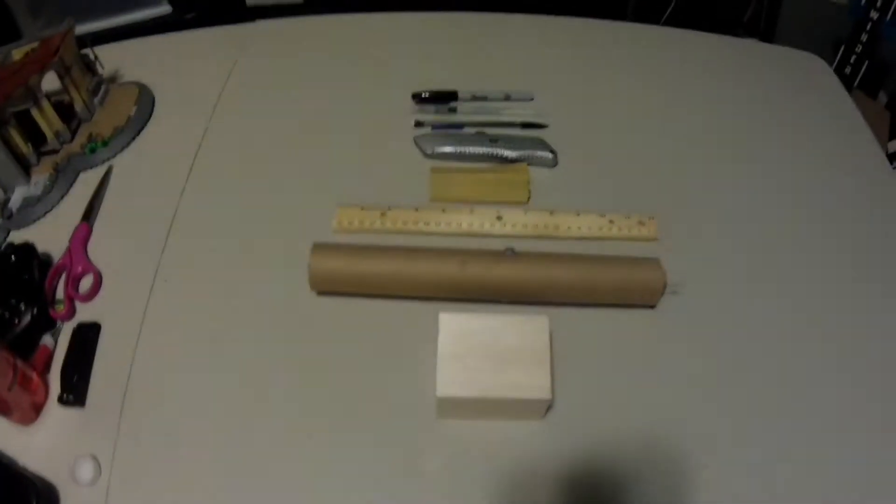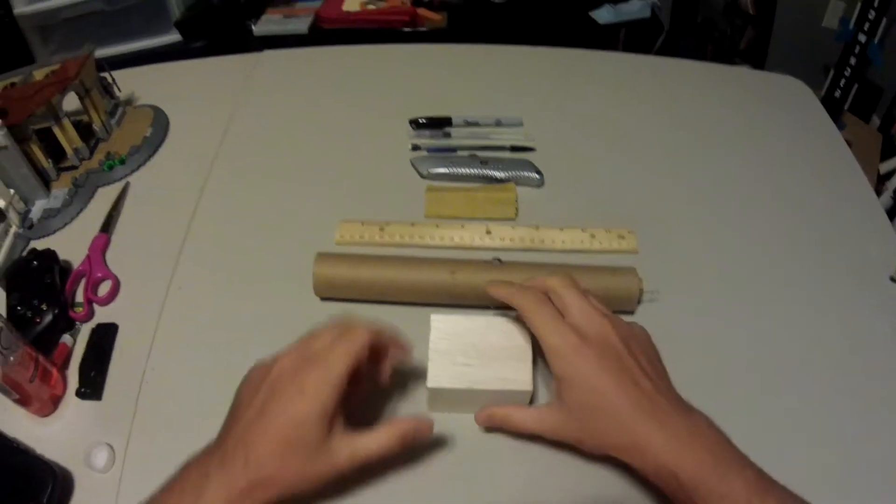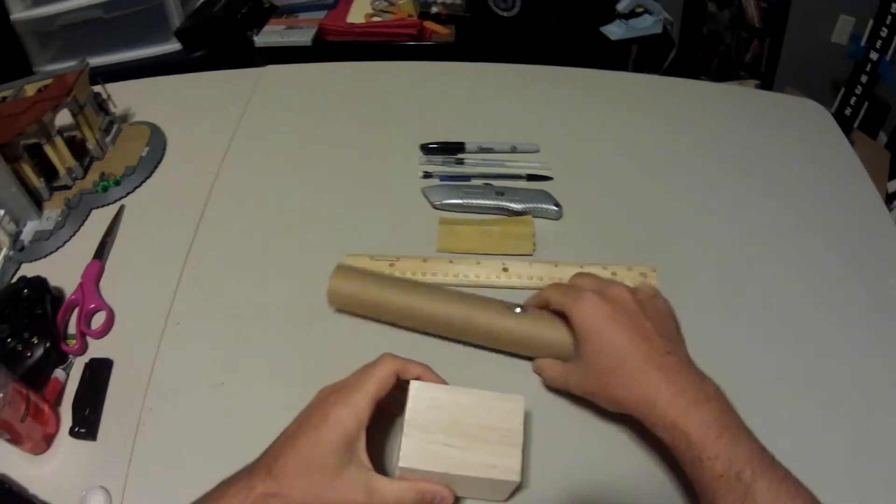Alright, this is episode four of how to make a reusable homemade rocket. Today we're going to be making our nose cone.